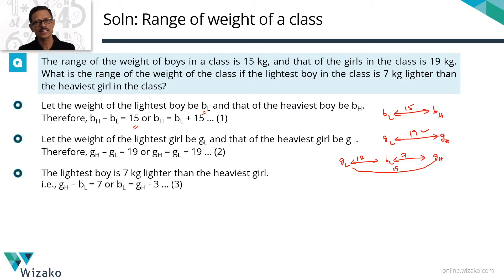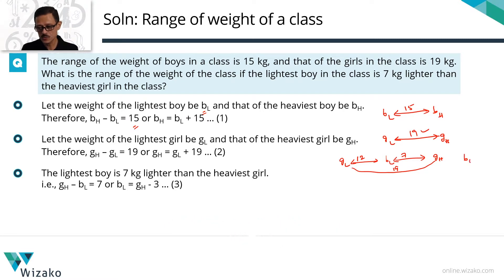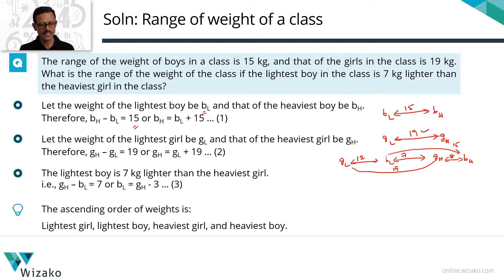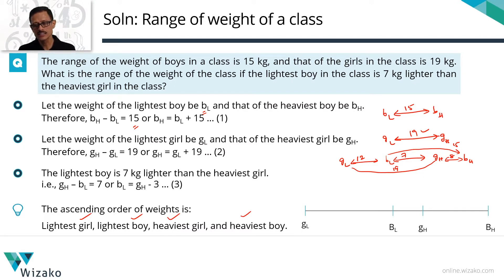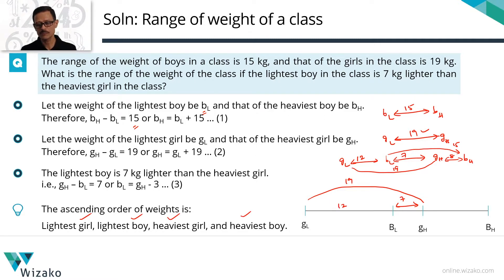Now, the heaviest boy is 15 kg to the right of the lightest boy. Since 7 kg to the right is already the heaviest girl, the heaviest boy goes even further right. The gap from lightest boy to heaviest boy is 15, of which 7 is already bridged to the heaviest girl — so the heaviest boy is 8 kg to the right of the heaviest girl. The full ascending order is: lightest girl, lightest boy, heaviest girl, heaviest boy, with gaps of 12, 7, and 8 respectively.